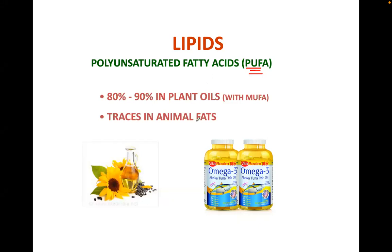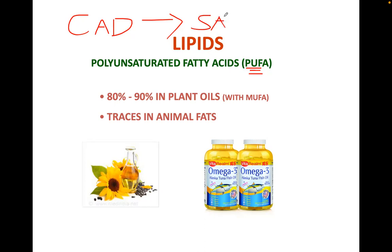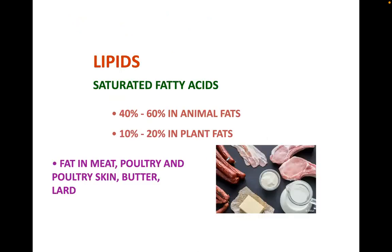Which is associated with coronary artery disease — saturated or unsaturated fatty acids? It is the saturated fats. The saturated fatty acids are the ones associated with coronary artery disease as well as atherosclerosis. The majority of saturated fats are found in animal fats.